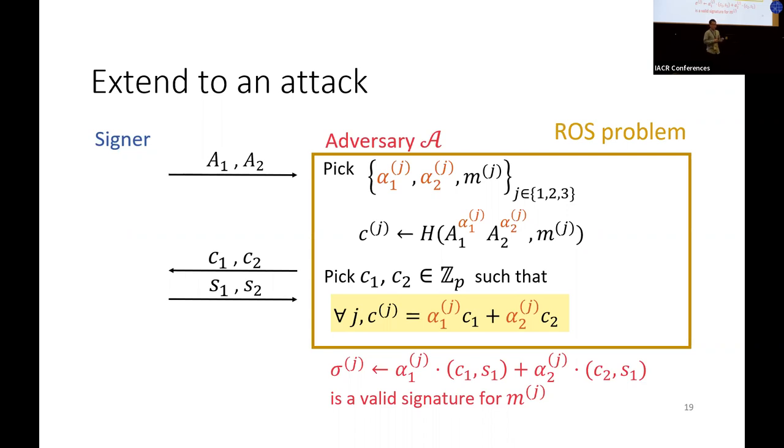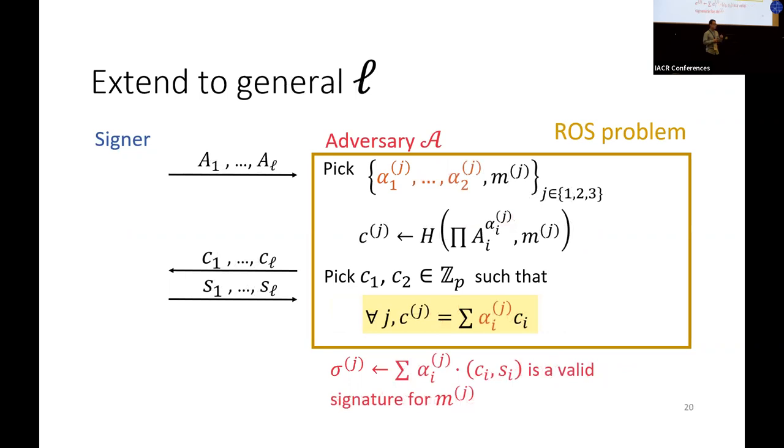However, the ROS problem is still hard for 2. But we can extend this attack to L sessions easily. And Benhamouda et al. shows that when L is larger than log p, the ROS problem is efficiently solvable. Therefore, it means blind Schnorr is insecure when L is larger than log p.